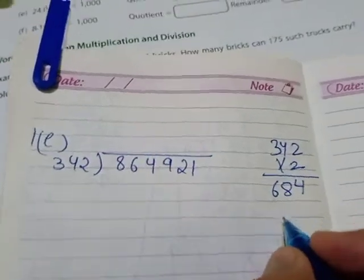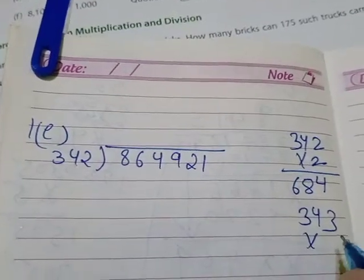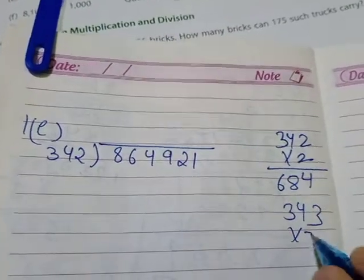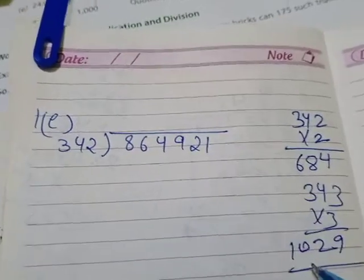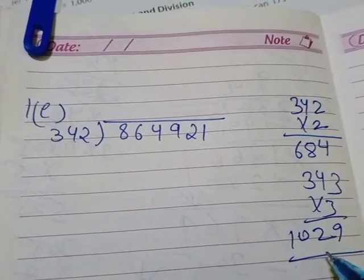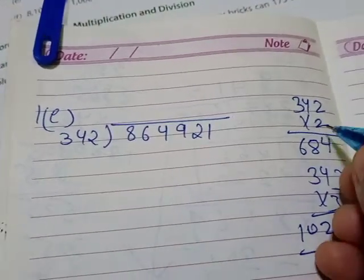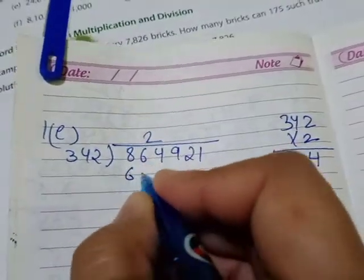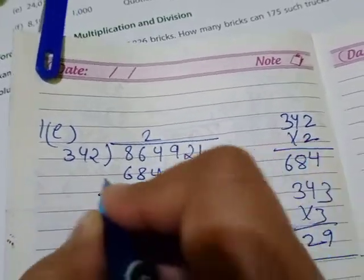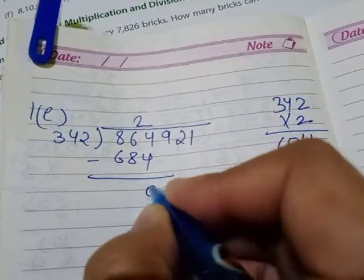Once we will try with 3 also, let me see that a number can come near this. So 3 3s are 9, 3 4s are 12, 3 3s are 9. It is coming much more, it is coming a 4 digit number. So can we take 3 times? No, we will take only 2 times. So 2 times it will be 684. Okay, then subtract: 4 minus 4 is 0, 16 minus 8 is 8, 7 minus 6 is 1.